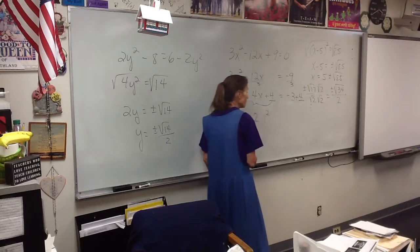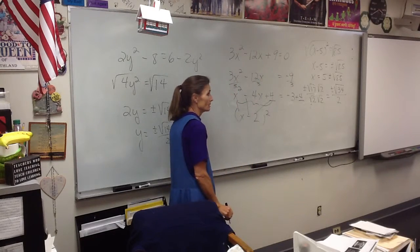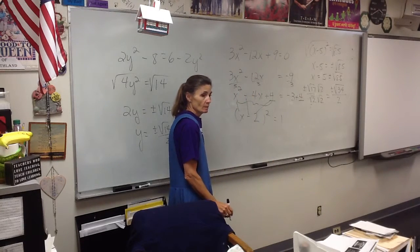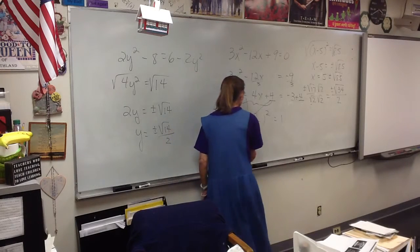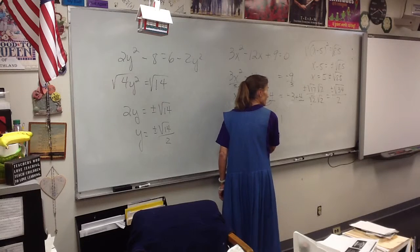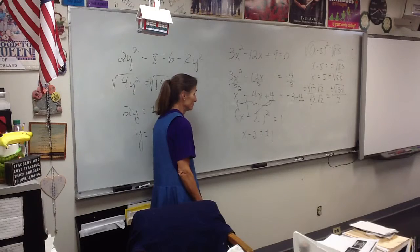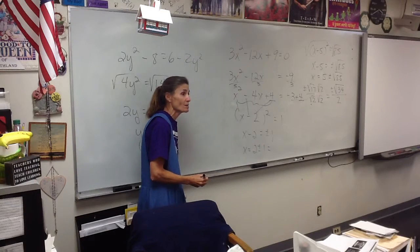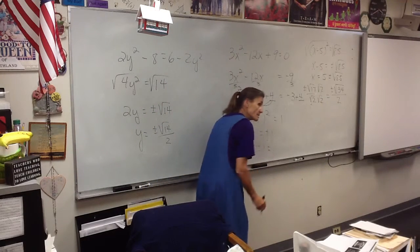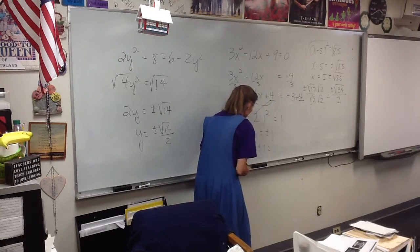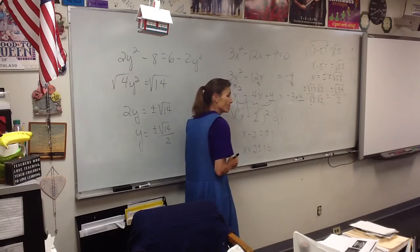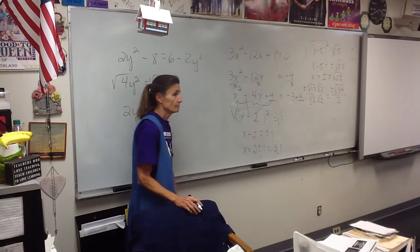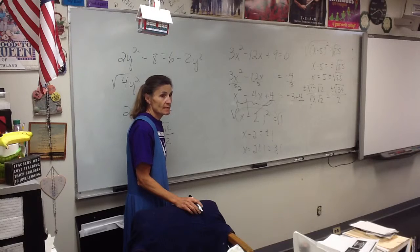X minus 2 squared equals 1. Oh, this one's going to work out nicely. Lauren, what do we do now? Square root both sides. So X minus 2 equals plus or minus the square root of 1, which is just 1. So X equals 2 plus or minus 1, so what are the two answers to the problem? 2 plus 1, Zach Bond. 2 plus 1 is 3, 2 minus 1 is 1.